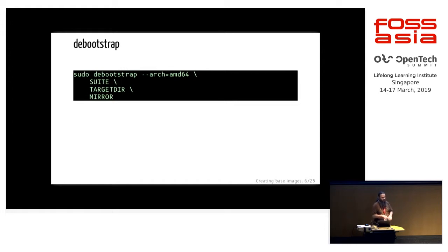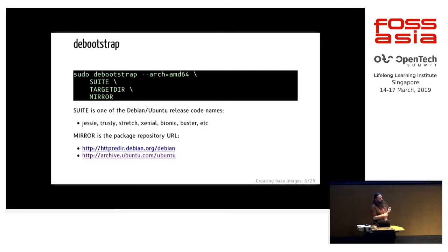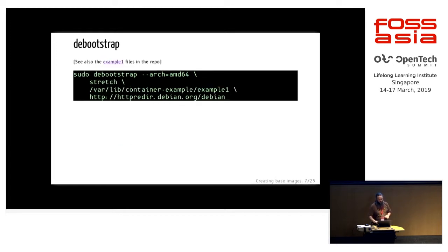Let's look at Debootstrap. Once you've installed Debootstrap, it's really simple to use — it just takes three command line parameters. You probably want to give it the architecture flag as well. The rest is: what distribution am I installing (the suite), what target directory am I installing into (the output directory), and what URL am I using to install from? These are all the standard code names from normal Ubuntu and Debian releases, and the mirror archive can be something you've got locally to speed things up, or just some archive on the internet that you trust. If I run that, I'll get a starting point for being able to build my template.